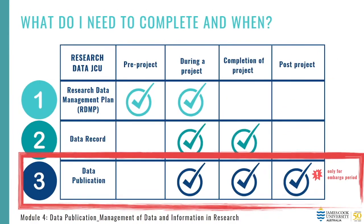A data publication can be completed at different times throughout your research project. As you can see in the table, sometimes a data publication is created during your project, for example when publishing thesis chapters, or it can be at the completion of your project. You can also embargo your data for a specific time period. If selected, this data publication will be securely embargoed until the time requested. At that point, access to the data will be permitted to the level you have specified under Access Conditions. We launched our new data repository platform, Research Data JCU, in January of 2021.